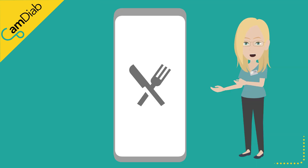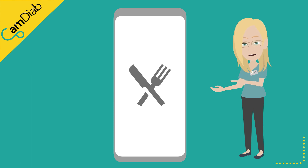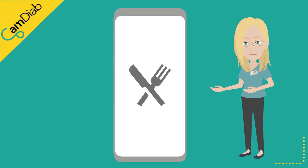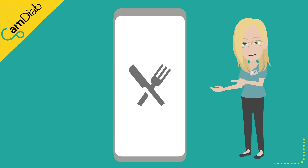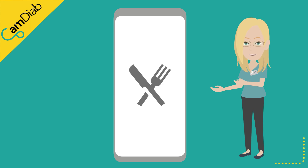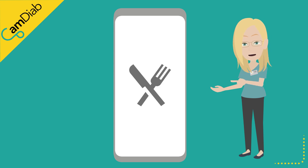On the home screen of the app, you will also find a knife and fork icon. Tap on this symbol to open the bolus calculator. The pump needs to be within 6 meters of the phone when you wish to use the bolus calculator. The phone's screen also needs to have an active security password or lock in place to allow the bolus calculator to be used.